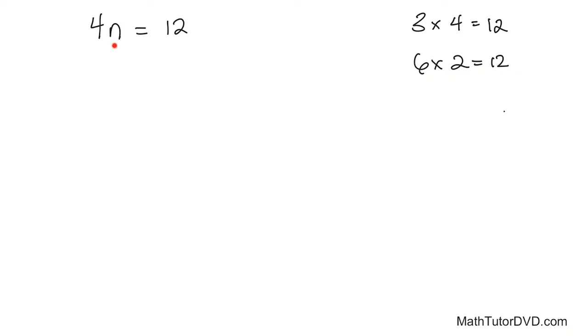So this is 4 times some variable, some unknown number, is equal to 12. Now let me ask you, 4 times what can equal 12? There's only one number that works here. 4 times what equals 12? And that means n must be equal to 3 because 4 times 3 is 12.